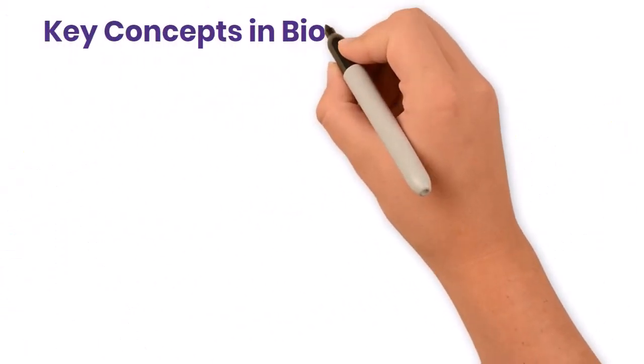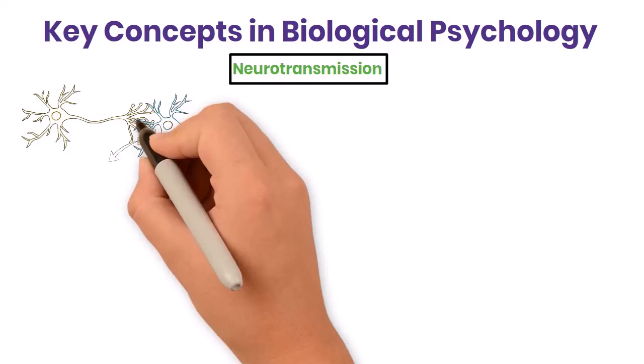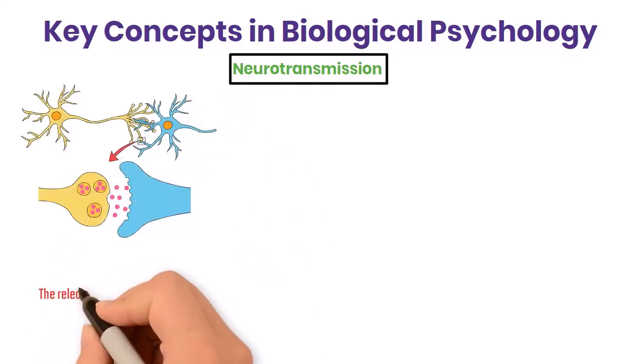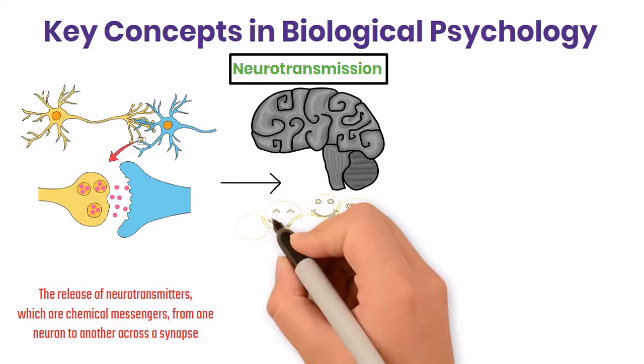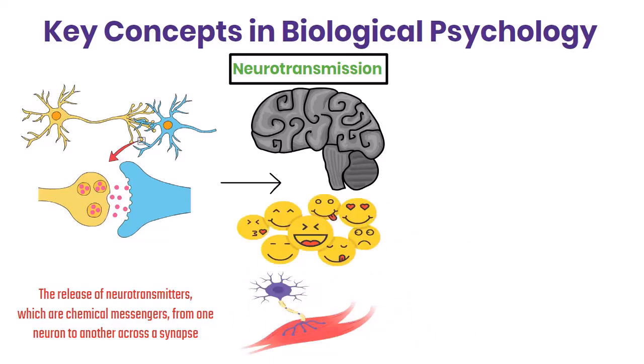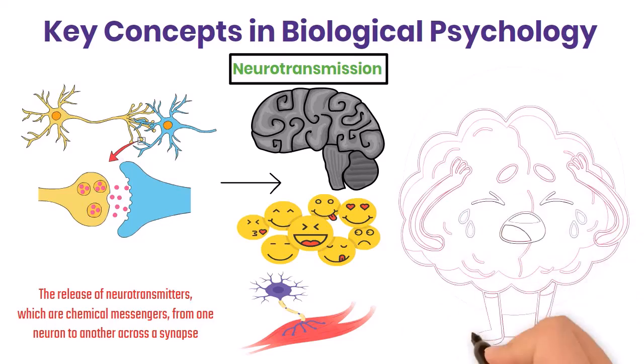Let's explore some key concepts in biological psychology. One key concept is neurotransmission. This is the process by which neurons communicate with each other. It involves the release of neurotransmitters, which are chemical messengers, from one neuron to another across a synapse. This process is crucial for brain function and affects everything from mood to muscle control. Understanding neurotransmission helps explain how drugs and medications affect the brain and behavior.